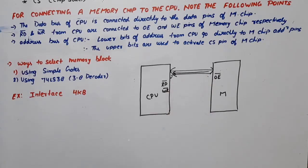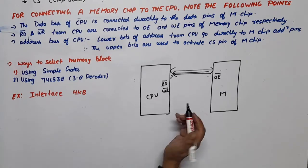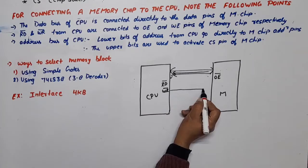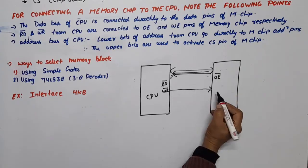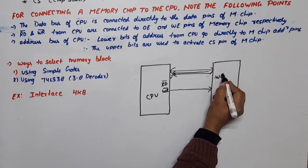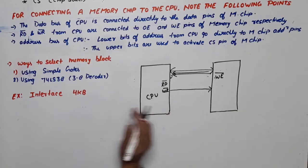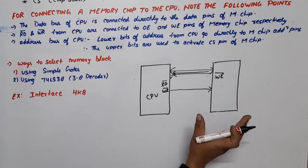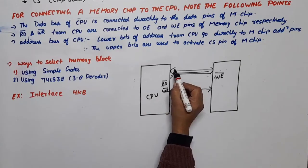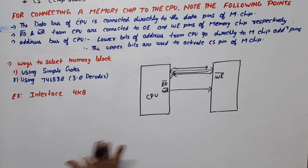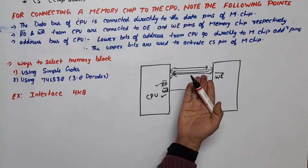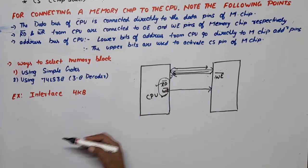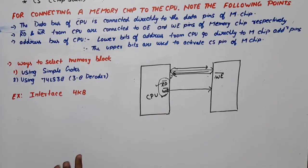If the CPU wants to write data, it sends a signal to memory indicating it wants to send data to memory. If memory is active and ready to receive data, write enable (WE bar) should be active. When WE bar is active, it means memory is ready to accept data, and the CPU will send data to memory. The data bus and control signals — read bar and write bar — decide whether the CPU wants to read or write.